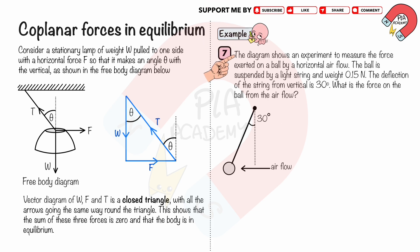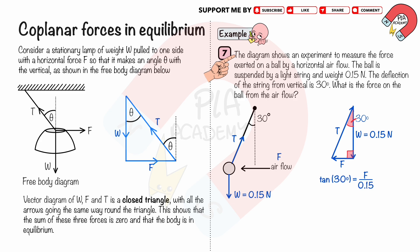Work Example 7: An experiment measures the force exerted on a ball by a horizontal air flow. The ball is suspended by a light string and weighs 0.15 N. The deflection of the string from vertical is 30 degrees. Since the ball is in equilibrium, the resultant force is zero and the vector diagram is a closed triangle. Using the tangent ratio: tan 30° = F / 0.15. Solving gives the force F = 0.087 N (two significant figures).